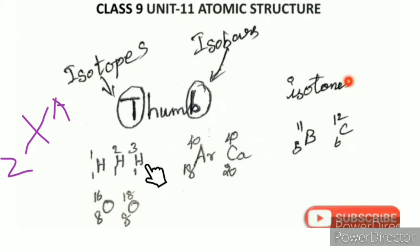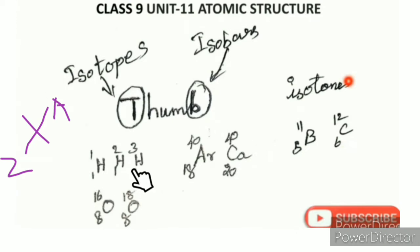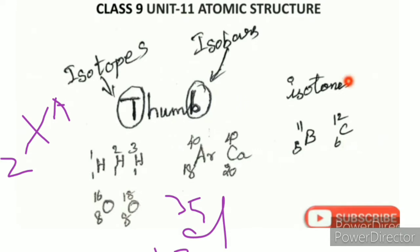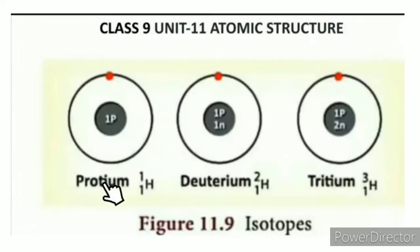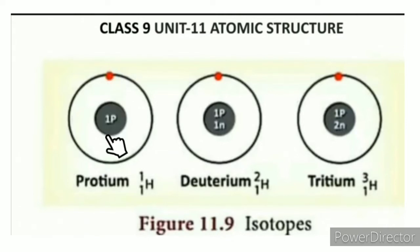Isotopes are atoms of the same element — like hydrogen — with the same atomic number but different mass numbers. Examples include: oxygen isotopes, chlorine isotopes (Cl-35 and Cl-37), carbon isotopes (C-612 and C-614), and hydrogen isotopes H-1, H-2, H-3. These atoms share the same number of protons and electrons but differ in their atomic mass.